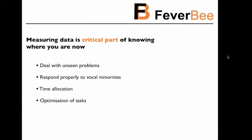Data will also help you respond correctly to the vocal minorities in your community. Five to ten complaining members could signal a real problem, or just a vocal minority that doesn't represent most people. Measuring data also helps you allocate your time. If you only have 10 or 15 hours a week, data shows you what's working and what's not, so you can cut out what isn't working and focus on what gives you the best results.